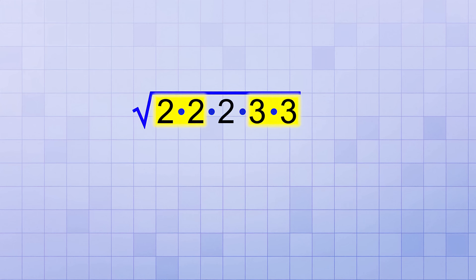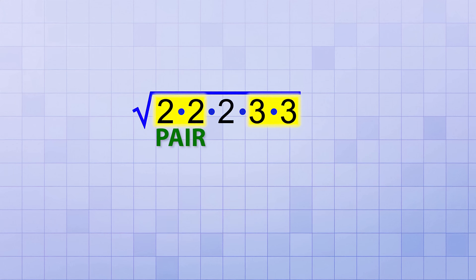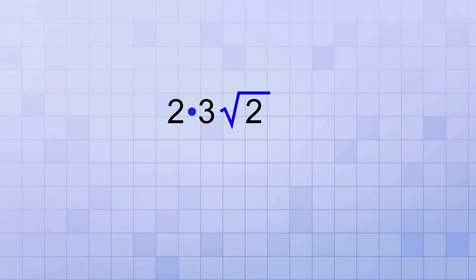Like before, we could rewrite this using our rule about multiplying roots. But now that you know how that rule works, you can eliminate some of the in-between steps if you realize that any pair of identical factors that are under the square root sign will simplify to become a single factor out in front of the root sign. That means you can just change the 2 times 2 under the root sign into a 2 out in front of it, and the 3 times 3 to a 3 out in front. That gives us 2 times 3 times the square root of 2, or 6 root 2 as the simplified answer.